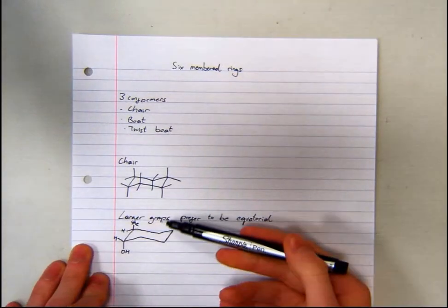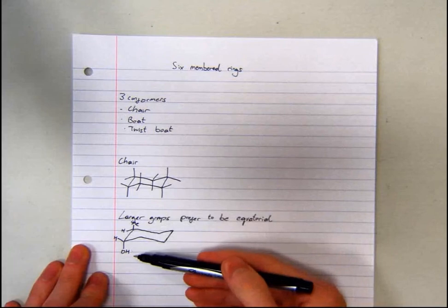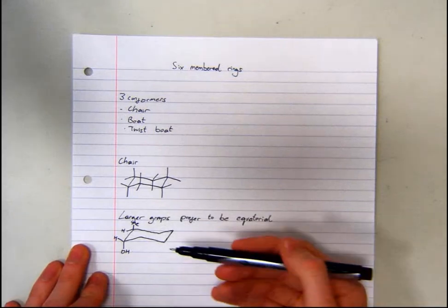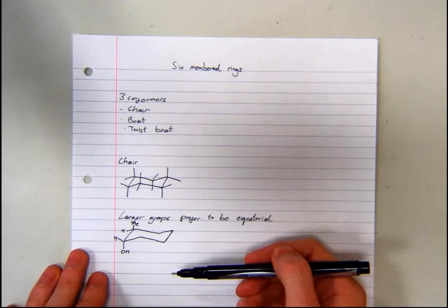In this case, the two largest groups, the methyl and the hydroxide group, are positioned axially, which is unfavourable.